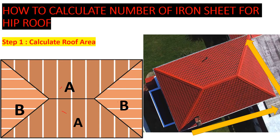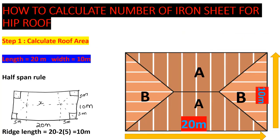We are going to divide it into sections — section A-A and section B-B — so we can get the roof area. The first thing you do before anything else is calculate the roof area. To do that, we need the length and the width. In this case, we have 20 meters length and 10 meters width, taken from the top view plan — not the actual house dimensions.